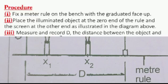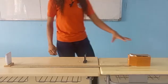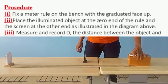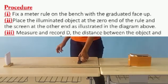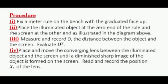The instruction says, face a meter rule on the bench with the graduated side facing up. Place the illuminated object at the zero end of the rule and the screen at the other end as illustrated in the diagram above. Measure and record D, the distance between the object and the screen. Evaluate D square.